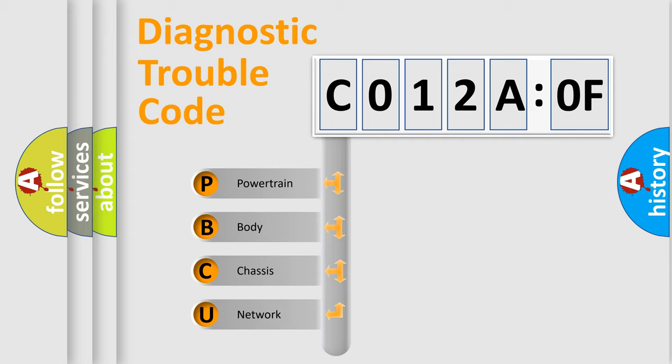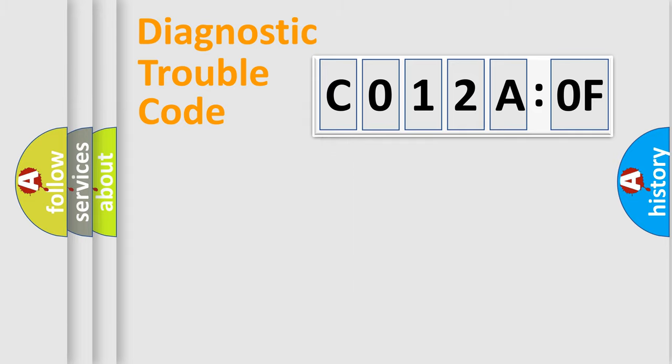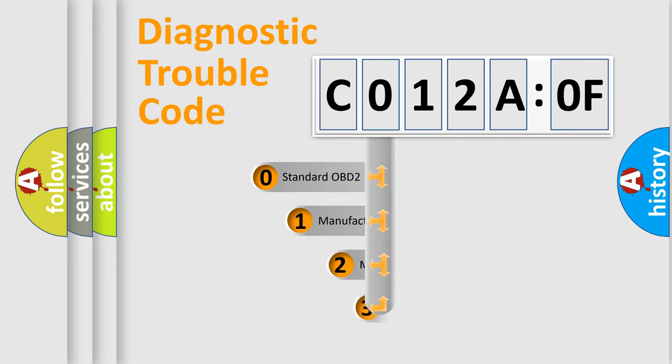We divide the electric system of automobile into four basic units: Powertrain, Body, Chassis, and Network. This distribution is defined in the first character code.